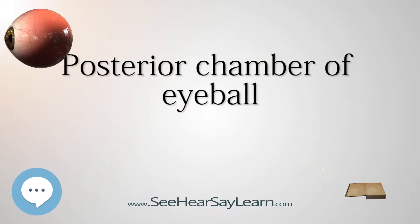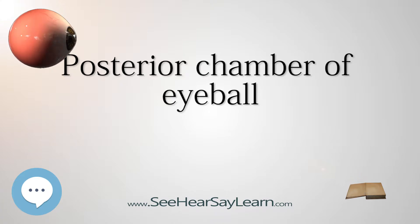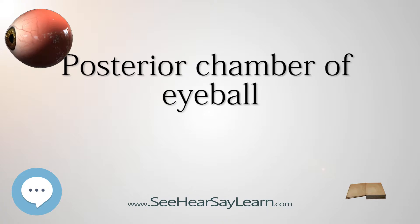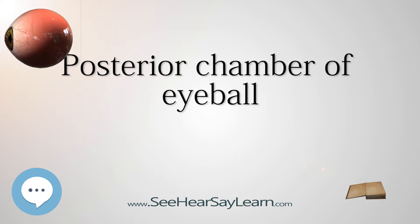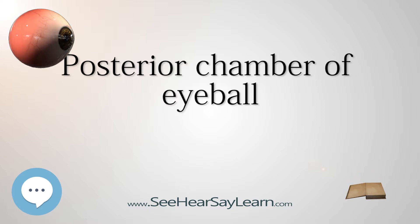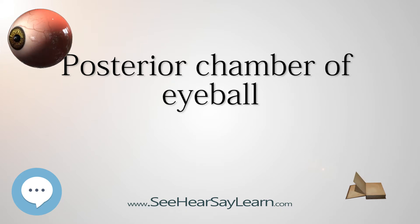The posterior chamber is a narrow space behind the peripheral part of the iris, and in front of the suspensory ligament of the lens and the ciliary processes. It consists of a small space directly posterior to the iris but anterior to the lens. The posterior chamber is part of the anterior segment and should not be confused with the vitreous chamber in the posterior segment.